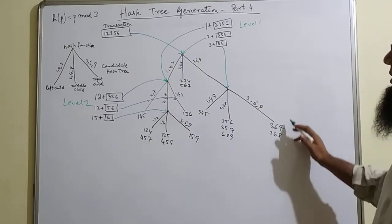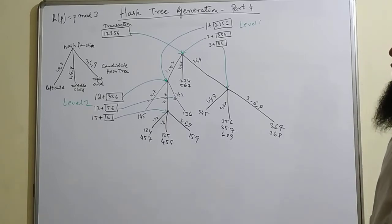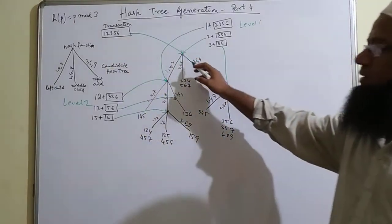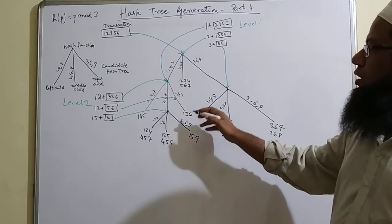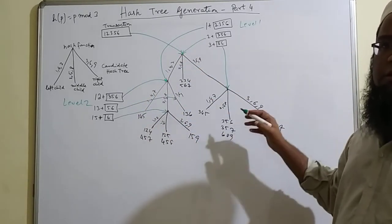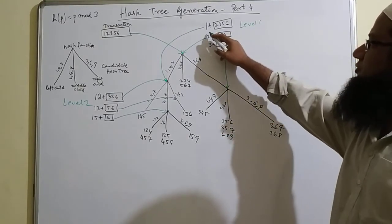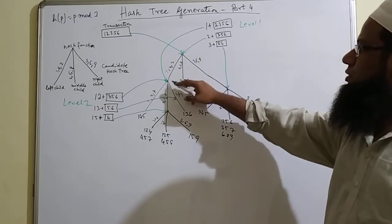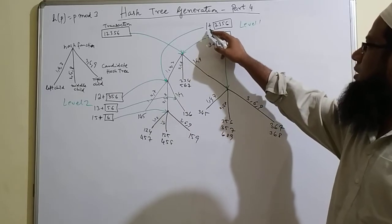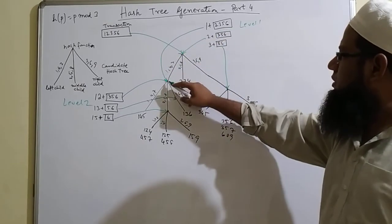We have this hash tree that is done in the previous video, and what is being done is the transaction item is hashed with this hash tree such that all the calculated items which are a part of the transaction will be traversed in this hash tree. Also, level 1 — that is the first item — is hashed to the hash tree. Similarly, 1 plus box 2, 3, 5, 6 is hashed to this part.